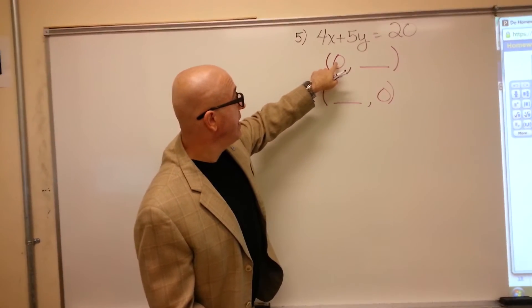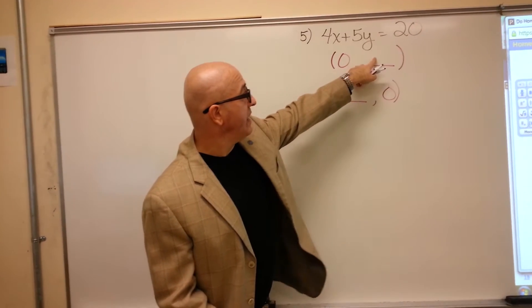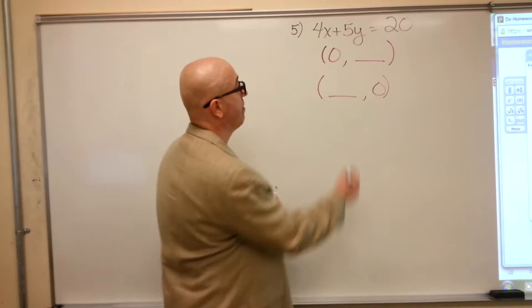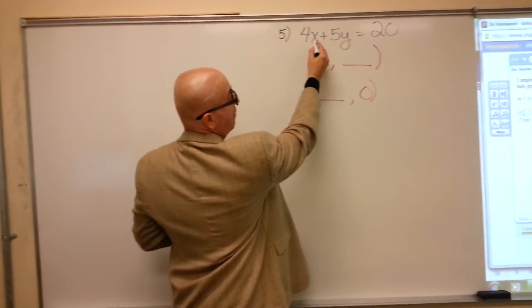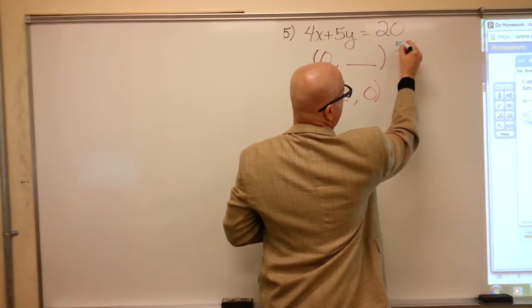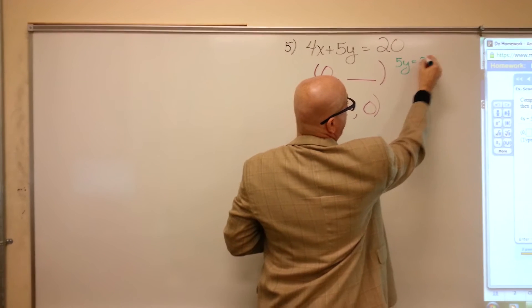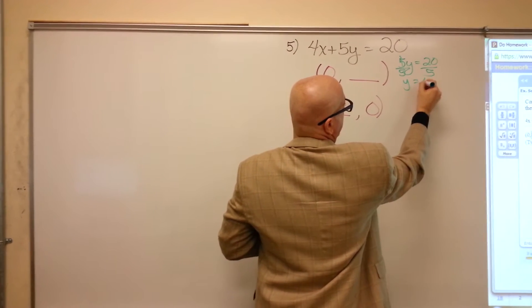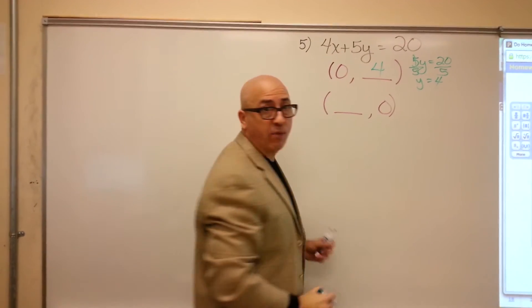MyMathLab is saying plug a zero in for x, fill in the blank, plug a zero for y, and fill in the blank. So putting a zero in for x, we have 5y equals 20, divide by 5, to get y equals 4.